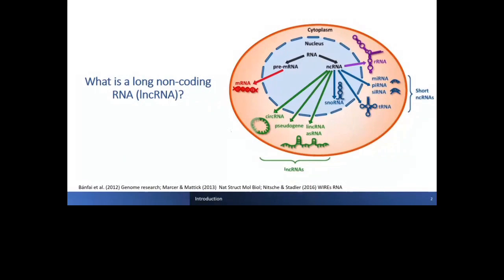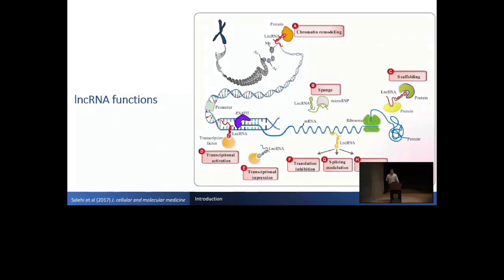Defining what is a long non-coding RNA. Long non-coding RNAs are non-coding RNAs that form part of the regulatory RNAs. We can differentiate them from microRNAs by their size and way of action. Long non-coding RNAs have many ways to act in generating regulation of genes.